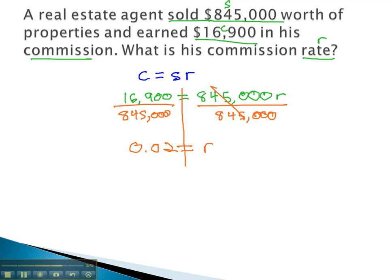Of course, that's the rate as a decimal, and we're probably interested in our commission rate as a percentage. So we need to change that decimal to a percent by moving the decimal point twice, and this real estate agent is bringing in 2% of all of his sales.